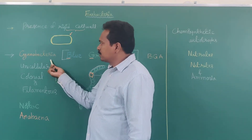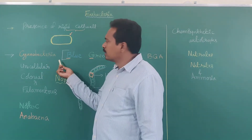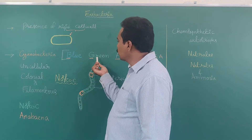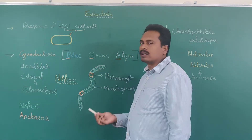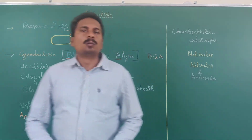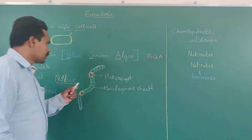Cyanobacteria. Cyanobacteria are referred to as blue-green algae because they appear blue-green in color.